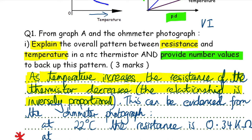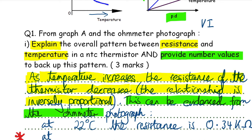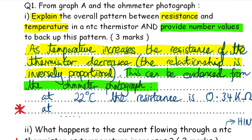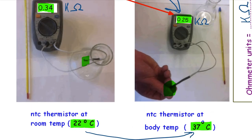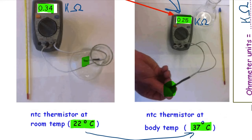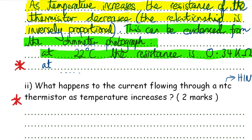The second part of the question asks you to provide number values, evidenced from the ohmmeter photograph. At 22 degrees Celsius the resistance is 0.34 kilo-ohms. You should finish that off by saying at 37 degrees Celsius the resistance of the thermistor is 0.25 kilo-ohms.